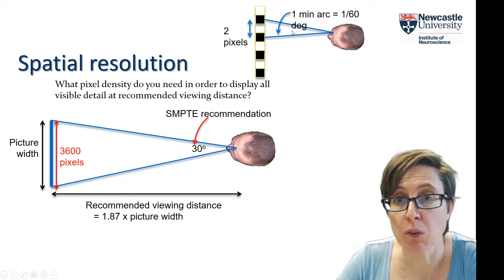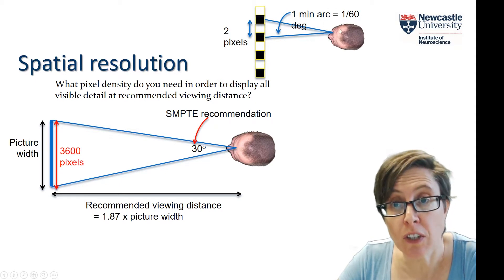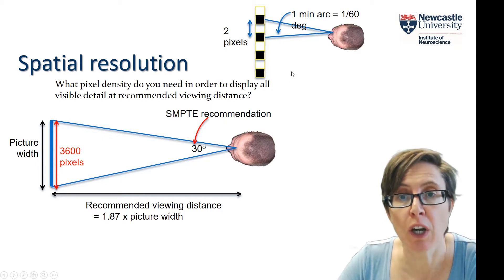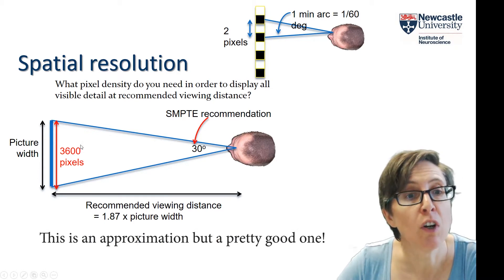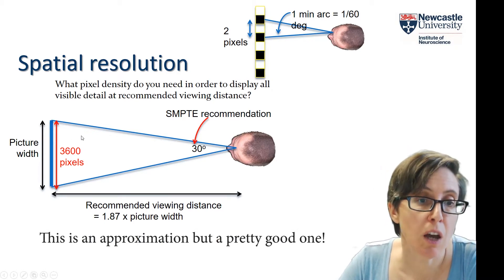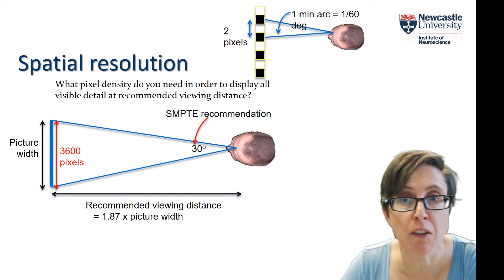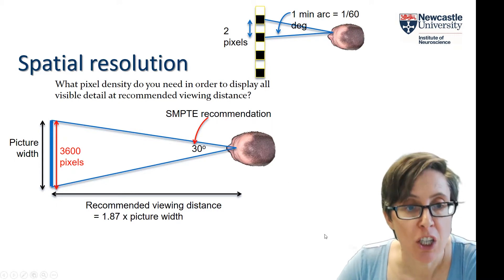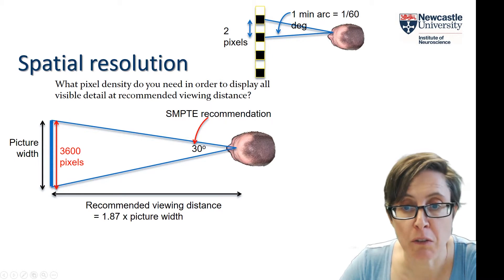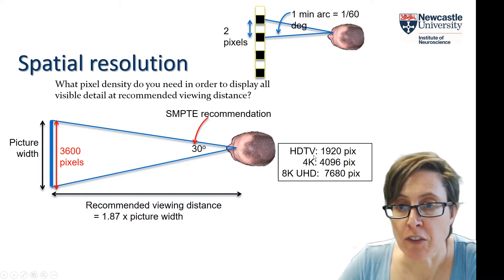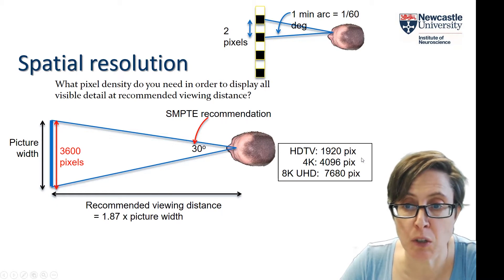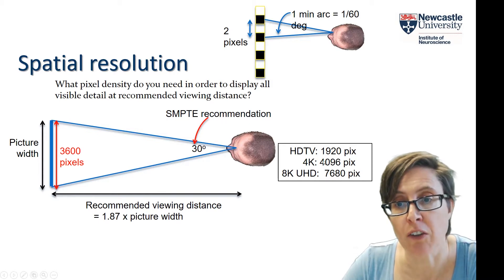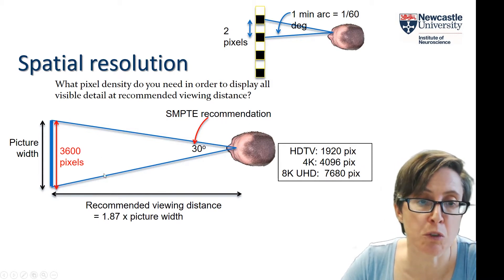If 2 pixels subtend 1/60th of a degree and you're sitting at the SMPTE recommended distance, then across the entire 30-degree screen we're going to have 2 × 60 × 30 = 3600 pixels. We could have more than that, but then the pixels would be closer together than 1/60th of a degree and I wouldn't be able to see that level of detail anyway. A standard HD TV has 1920 pixels across the whole screen, a lot less than 3600. If I buy a 4K television, it's going to be 4096 — comfortably above this limit.